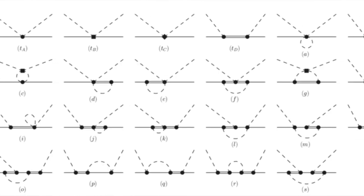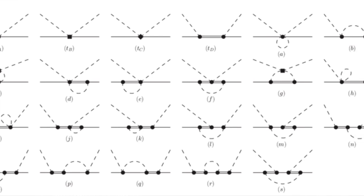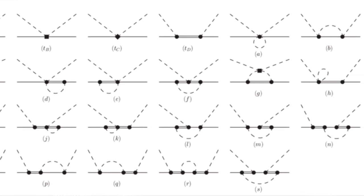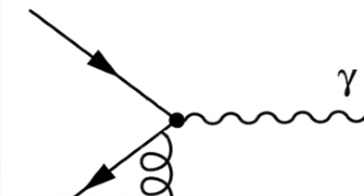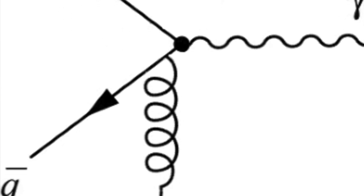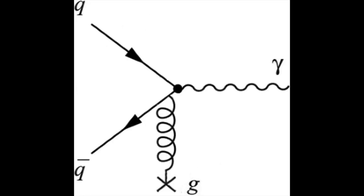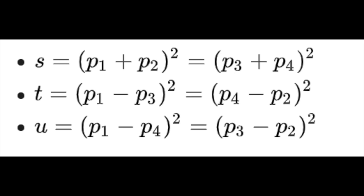Feynman diagrams describe particle scattering and how particles interact. For example, you can have an electron and an anti-electron meet at a point, annihilate with one another, and produce a photon. Then you can have one quark and one anti-quark appearing elsewhere and producing the gluon field. Feynman diagrams are looked at in different ways — labeled S, T, and U — these are called Mandelstam variables.